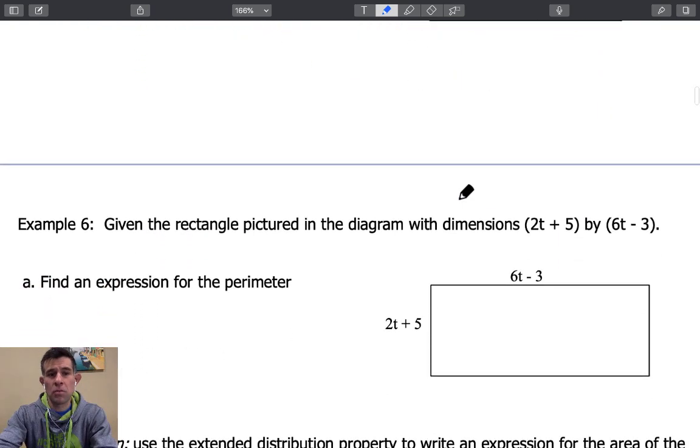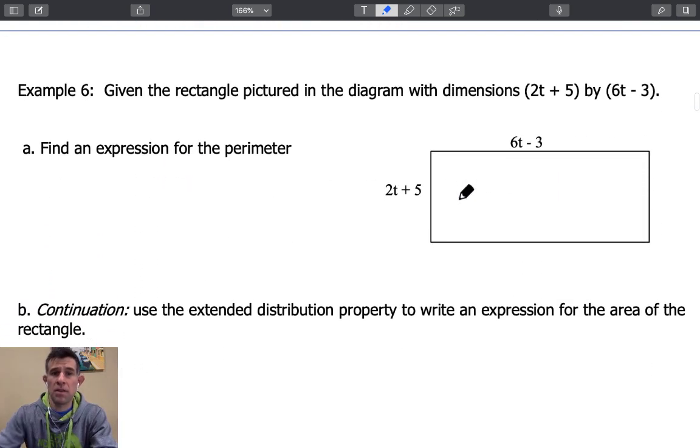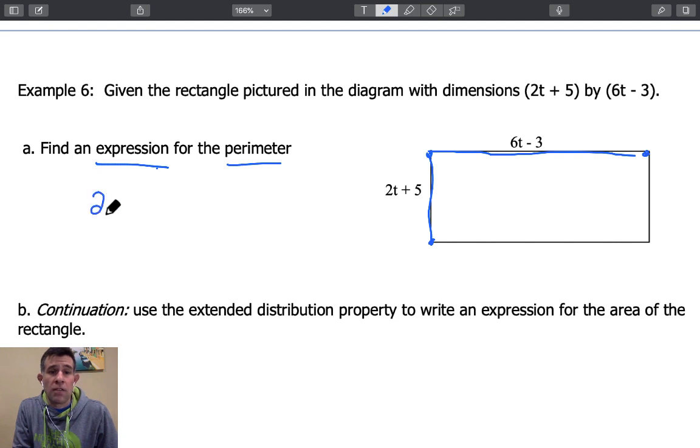Let's tackle one more example problem here. It says given the rectangle pictured in the diagram with the dimensions 2t plus 5 by 6t minus 3, we want to find now an expression for the perimeter. So keep in mind an expression means it's going to be in terms of a variable and some constants but it's not actually going to be a value. Perimeter remember means addition all the way around and because this is a rectangle we know our opposite sides are going to be congruent.